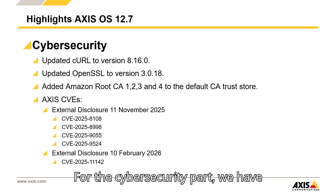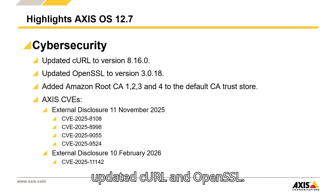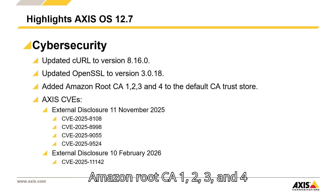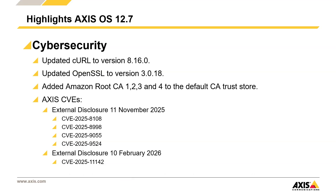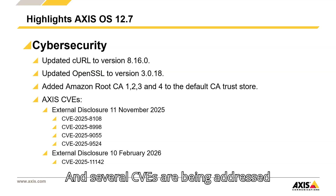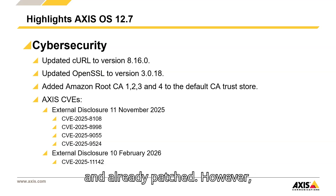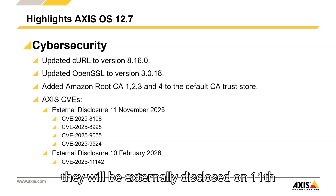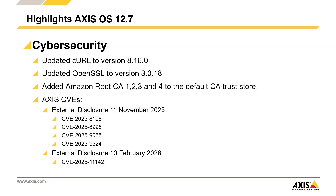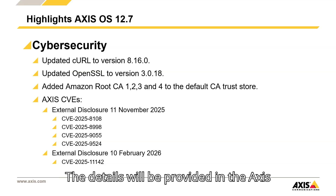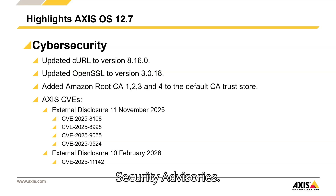For the cybersecurity part, we have updated curl and OpenSSL. Amazon Route CA 1, 2, 3, and 4 are added to the default CA Trust Store. Several CVEs are being addressed and already patched. However, they will be externally disclosed on the 11th of November and 10th of February. The details will be provided in the Axis security advisories.